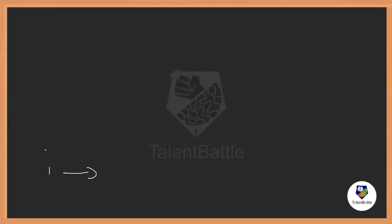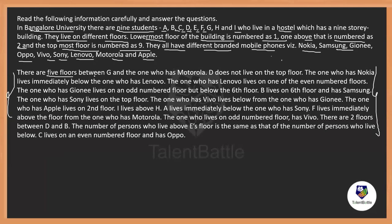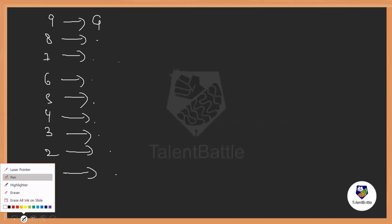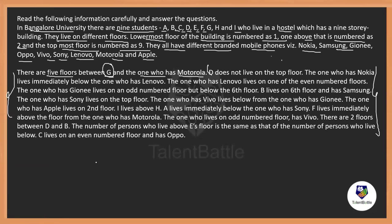Now we need to identify the person on each floor and the phone they are using. The first hint: there are five floors between G and the one who is using Motorola — this is an indirect hint, meaning many positions are possible. G could be on one floor and Motorola five floors away, or it could be reversed. Such hints are called indirect hints because you cannot place positions exactly just by reading one sentence. I will always try to start with a direct hint.